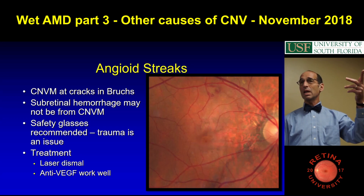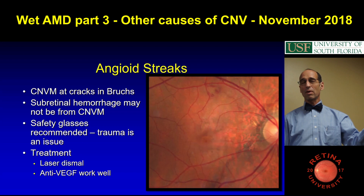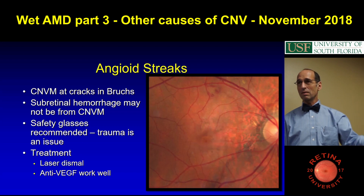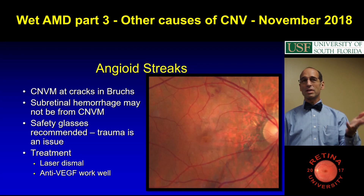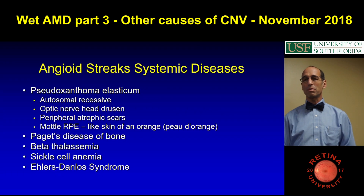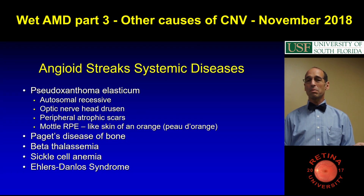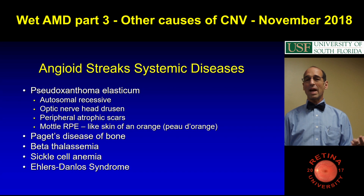I had one patient I was treating for AMD, and he wasn't behaving, so I did an FA/ICG, and I was like, oh my goodness, you've had angioid streaks — because they lit up everywhere. You need to know the associated diseases. Pseudoxanthoma elasticum is a big one. And then Paget's, beta-thalassemia, sickle cell anemia.